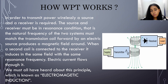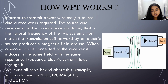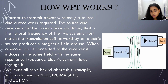How does wireless power transmission work? In order to transmit power wirelessly, a source and a receiver are required. The source and receiver must be in resonance condition, meaning the natural frequency of both systems must match. The transmission coil, powered by an electric source, produces a magnetic field around it. When a second coil connected to the receiver is placed in the same field with the same resonance frequency, electric current flows through it. This principle is known as electromagnetic induction.